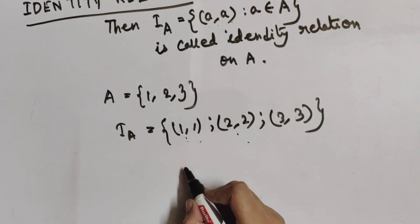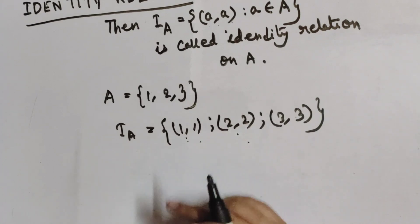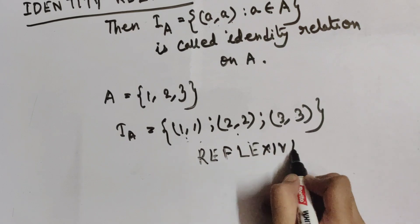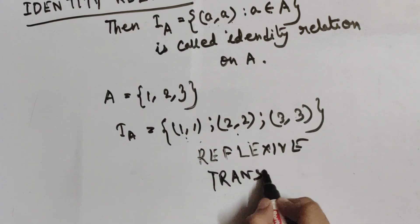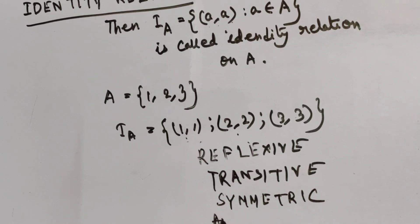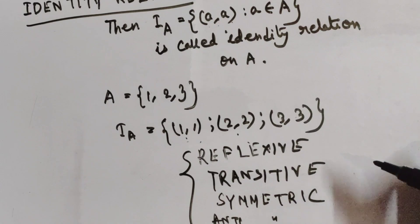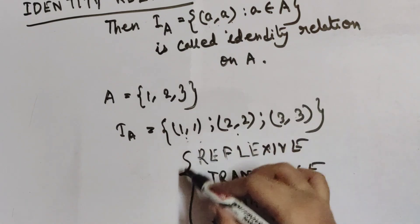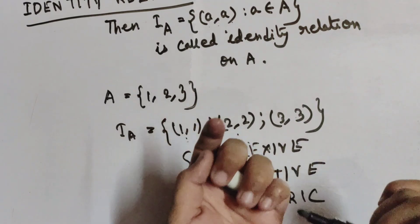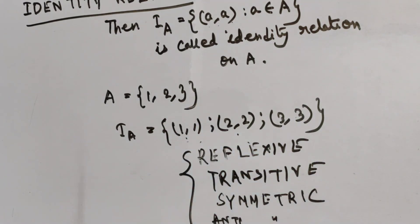That's all for today. Next time I will discuss four more types of relations: reflexive, transitive, symmetric, and antisymmetric. I will define and illustrate each of those four relation types. Let's practice — it's your time to prepare on this chapter.